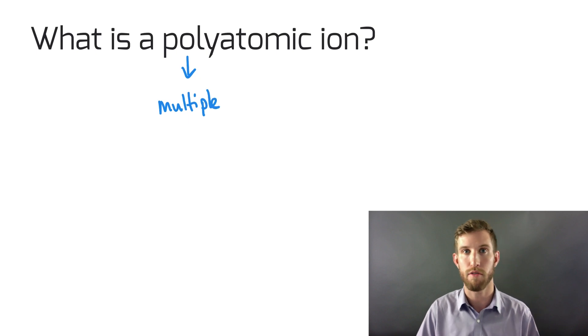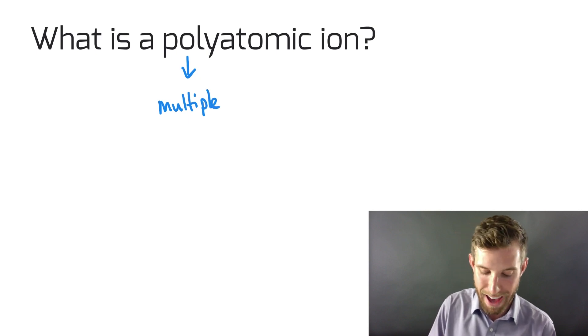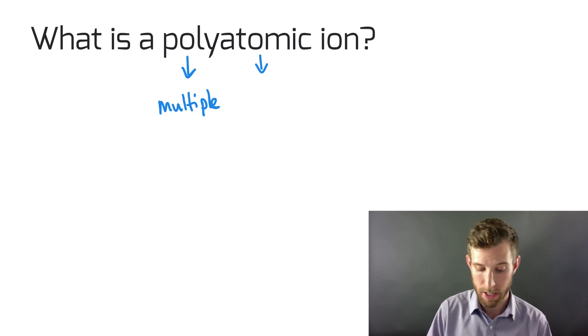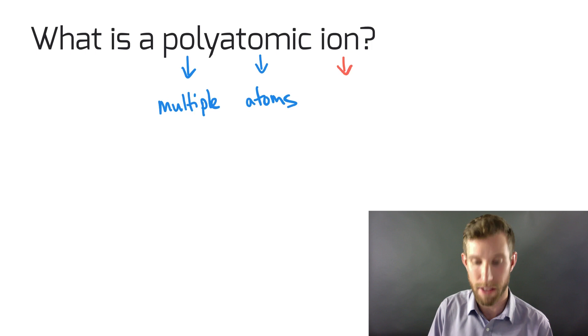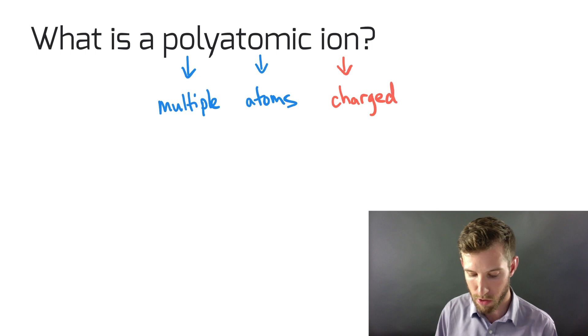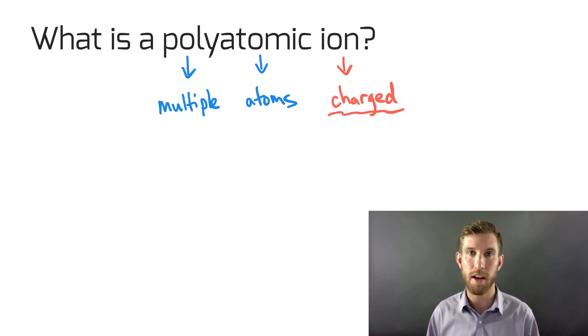So we're talking about two, three, or maybe more atoms, and we know where we get those atoms from on the periodic table. Essentially we look at having multiple atoms combining together to form an ion, and an ion is something that is charged. If we put those things all together, we can look at multiple atoms that have a charge.